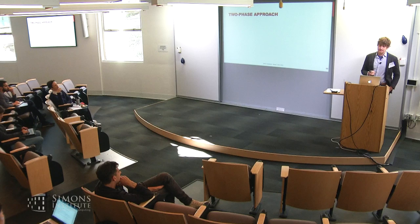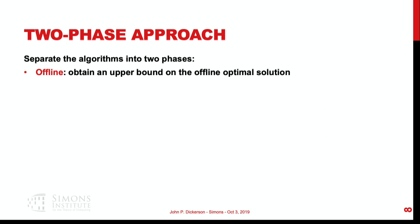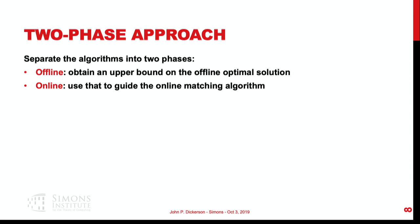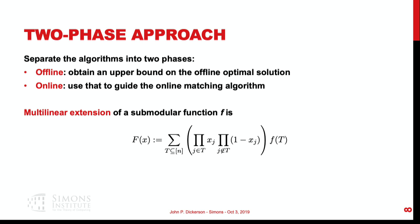We'll take a two-phase approach. Offline, we obtain an LP upper bound — a math-program-based upper bound on the offline optimal solution. We know the distribution D from which vertices are arriving and U entirely offline, so we can do this. Then online, we use the result of that offline optimal solution to guide our matching algorithm. The offline solution makes heavy use of the multilinear extension of a submodular function.